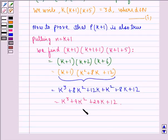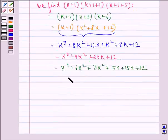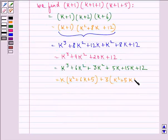Now writing the equation in such a form to get 3d, we can write it as k³+6k²+3k²+5k+15k+12. This can be written as k(k²+6k+5)+3(k²+5k+4).